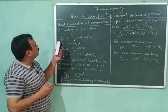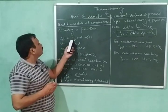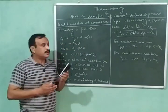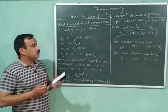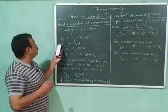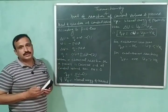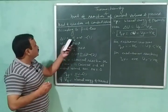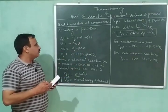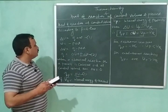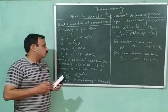According to the first law of thermodynamics, ΔU = q + w. If the work w is the work of expansion, then w = −PΔV, because work is done by the system. So this equation becomes ΔU = q − PΔV, and from this equation we have q = ΔU + PΔV. Let this be equation number 2.